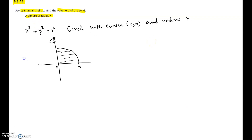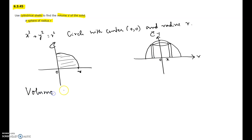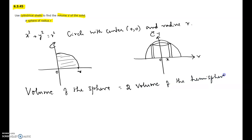Looking at the graph, when you rotate it about the y-axis it looks like this — the y-axis is vertical and the x-axis is horizontal. We are going to place a cylinder at a distance x from the axis of rotation, which is the y-axis. So this is our axis of rotation, and we place a cylinder there. In the cylindrical shells method, we find the circumference, the height, and the thickness.